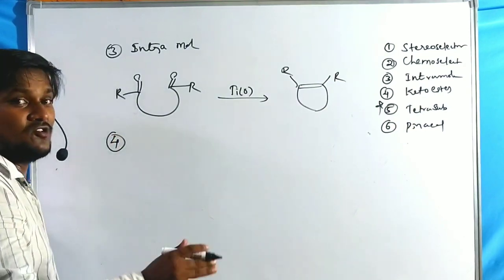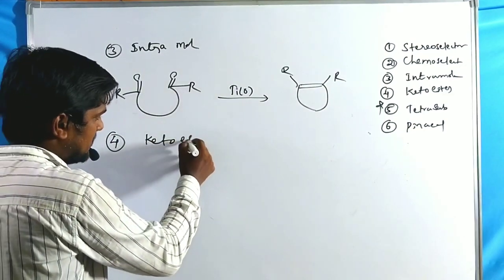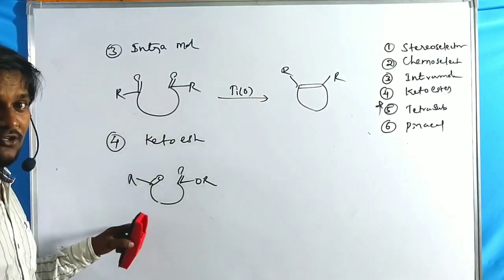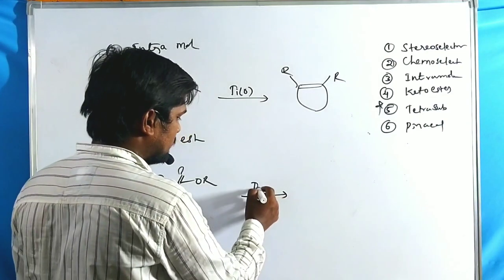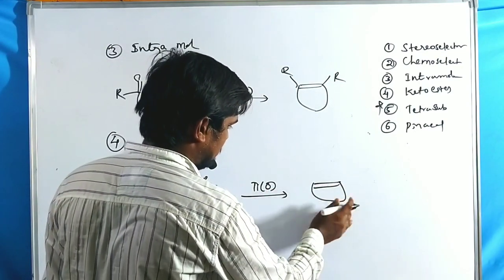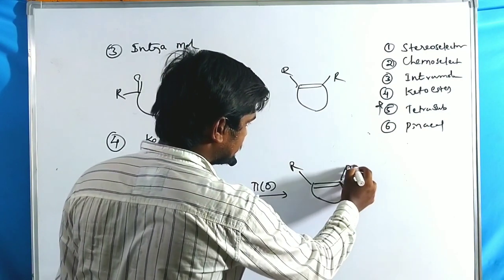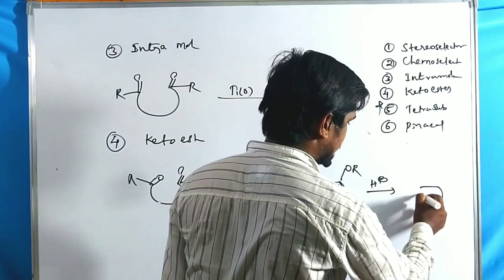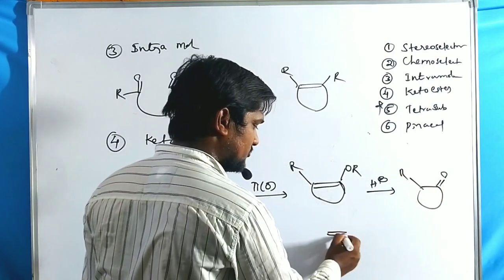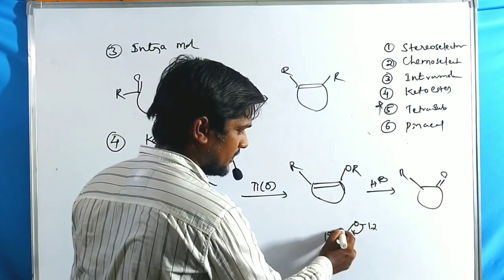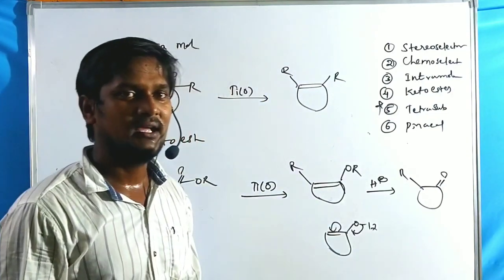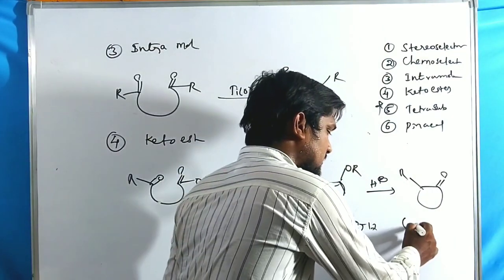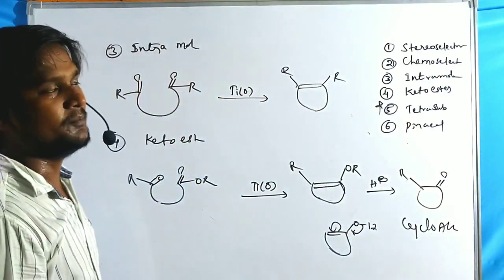The fourth feature: keto-esters can also undergo McMurray Coupling. A ketone and ester treated with titanium zero catalyst form an enol ether (R-O-R). Upon hydrolysis, this gives a carbonyl compound — the enol tautomerizes to the ketone form. Keto-esters in the presence of titanium oxide give cycloalkenones as products.